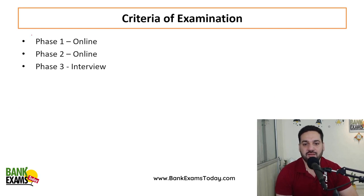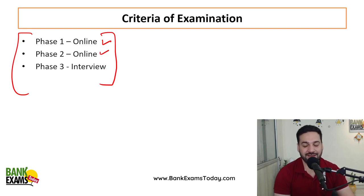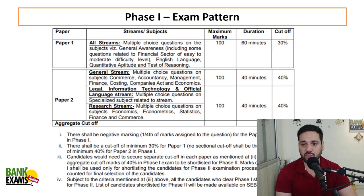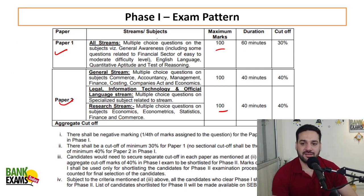There are three phases: phase one, phase two, and phase three. Phase one and phase two are online exams, and phase three is an interview. In phase one, there are two papers of 100 marks each. Both are MCQ-based papers — paper one and paper two.